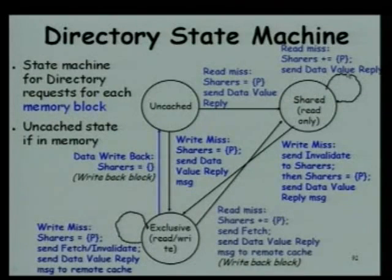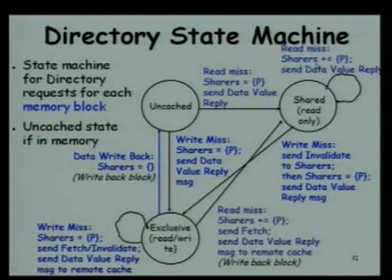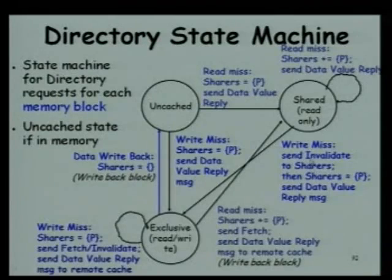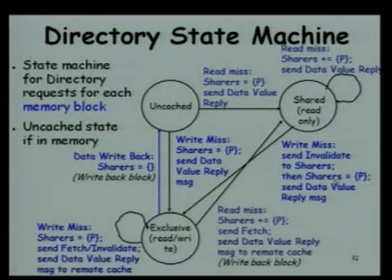If there is a read miss by another processor wanting the same data, it sends the data value and adds the ID of the requesting node to the sharer set, staying in the same state. If there is a write miss generated by one processor, it has to send an invalidate request to all those holding it, invalidating all sharers. It then initializes the sharer set to the one who generated the write miss, and sends the data value as a reply message.